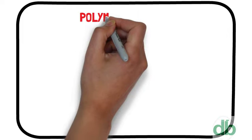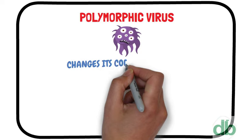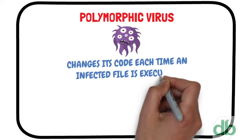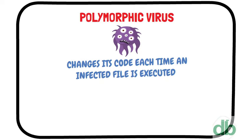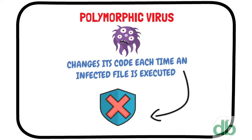6. Polymorphic virus: A polymorphic virus changes its code each time an infected file is executed. It does this to evade antivirus programs.